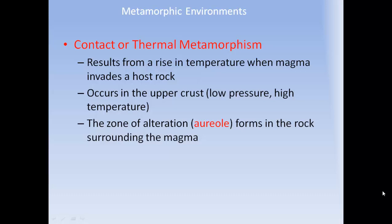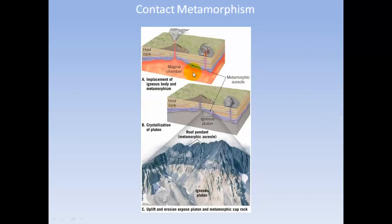Contact or thermal metamorphism results from the rise in temperature when magma invades a host rock. It occurs in the upper crust at low pressure but high temperature. A zone of alteration called the aureole forms in the rock surrounding the magma. The rocks nearby the magma chamber start to change as it heats them — this is the metamorphic area where rock has been metamorphosed.